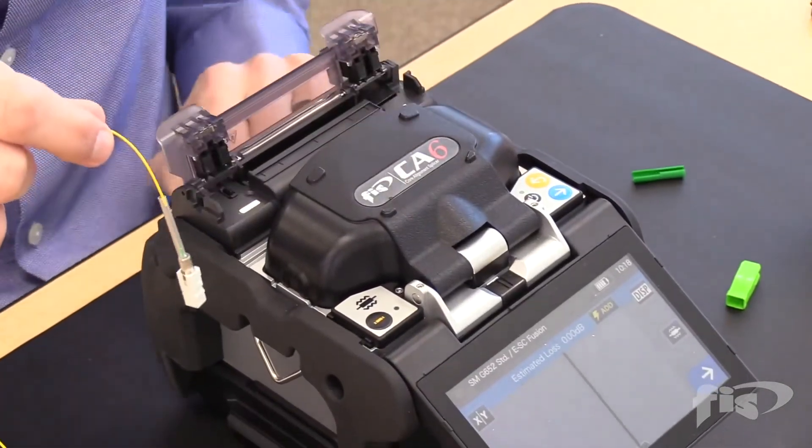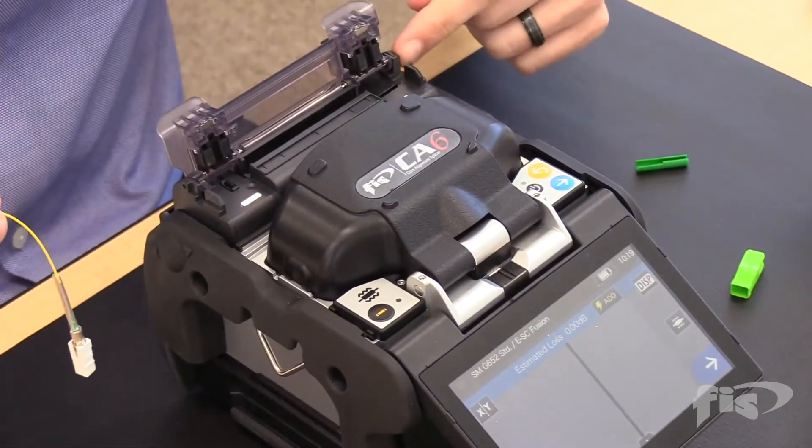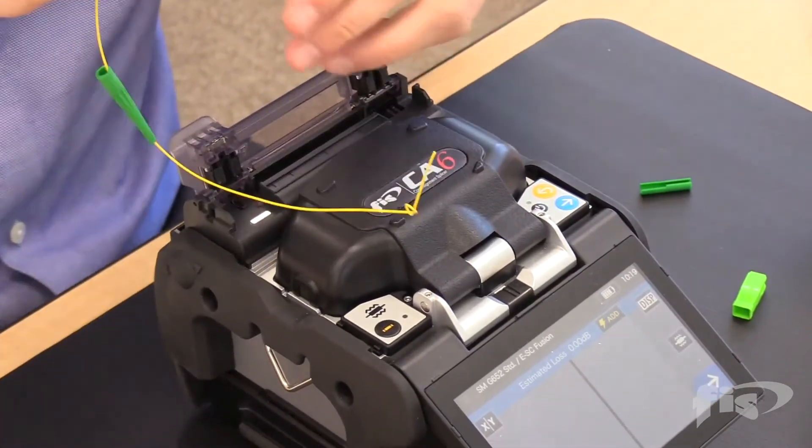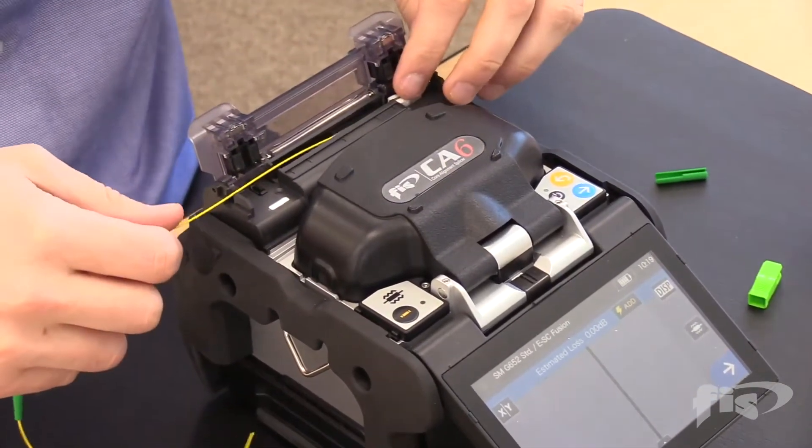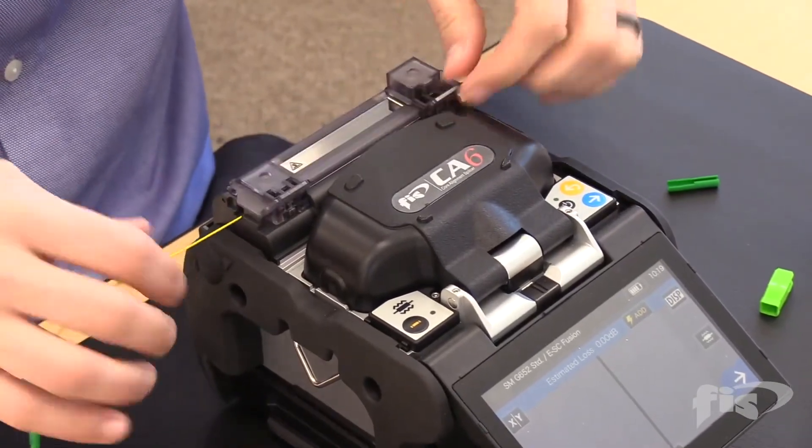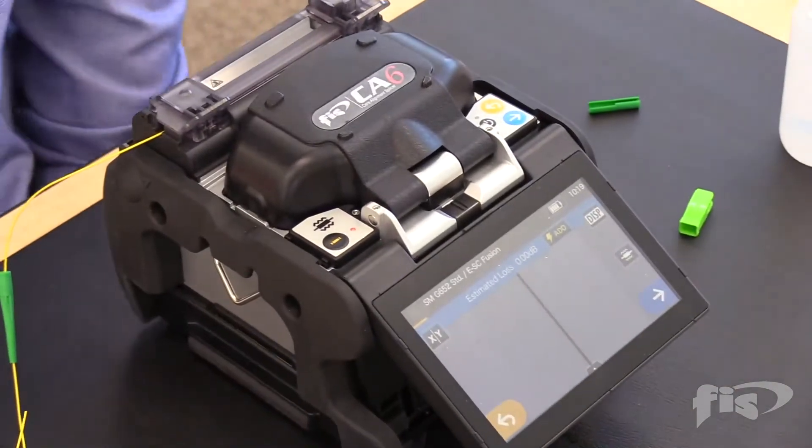The CA-6 has been modified for splice-on connectors, and there is a tiny switch on the right side of the oven. Push it back with a finger. Notice the orange light is on, indicating the oven is on.